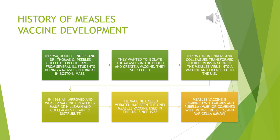In 1968, an improved and weaker vaccine created by Maurice Hillman and colleagues began to be distributed. The vaccine has been the only measles vaccine used in the United States since 1968. The measles vaccine is combined with mumps and rubella, or combined with mumps, rubella, and varicella.